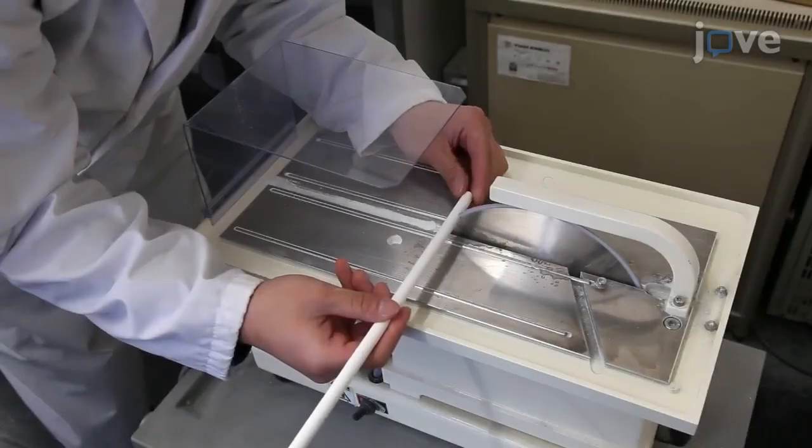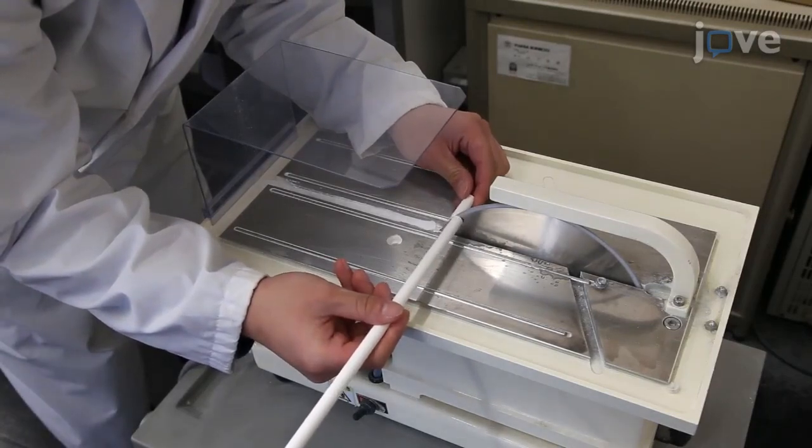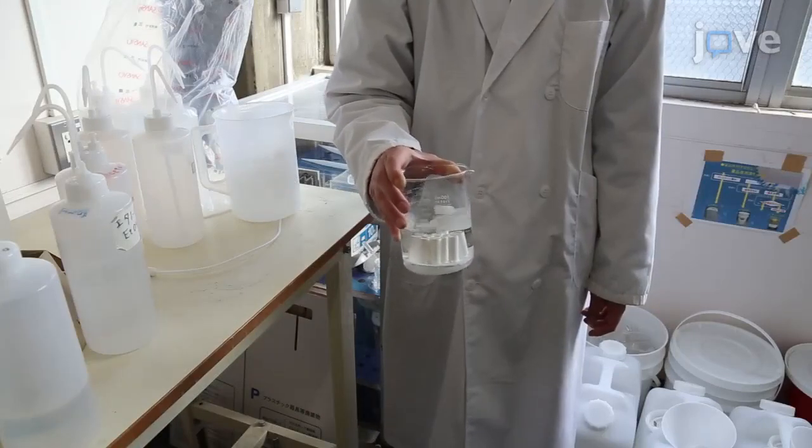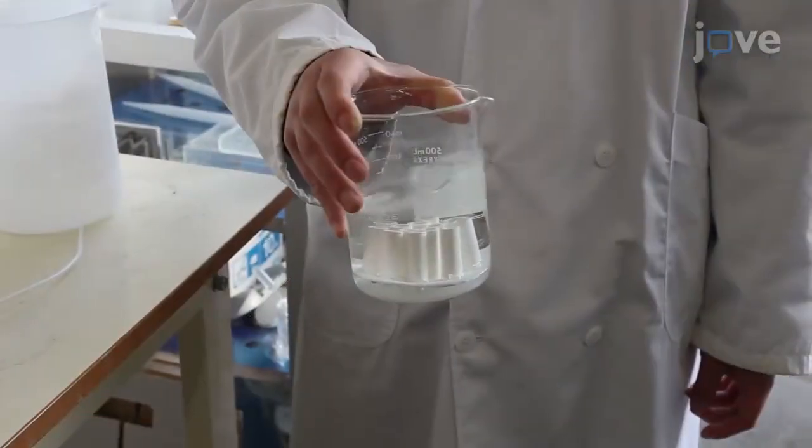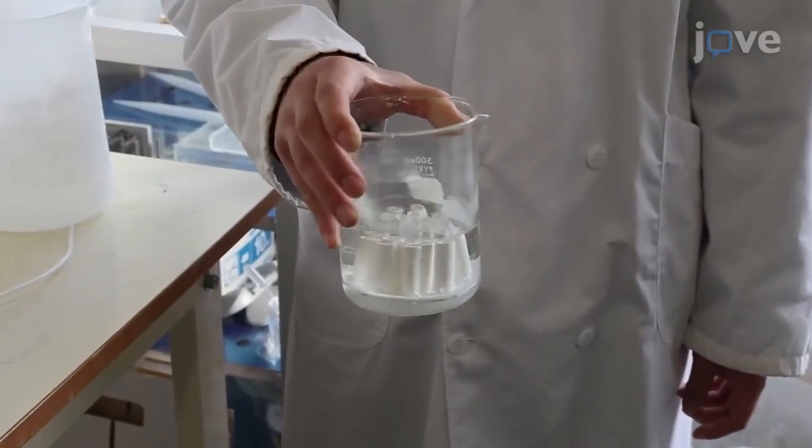To begin, cut out a 3 cm long tubular porous alpha aluminum oxide support. Wash the support with distilled water for 10 minutes. After that, wash the support with acetone for 10 minutes. Repeat this washing process twice.